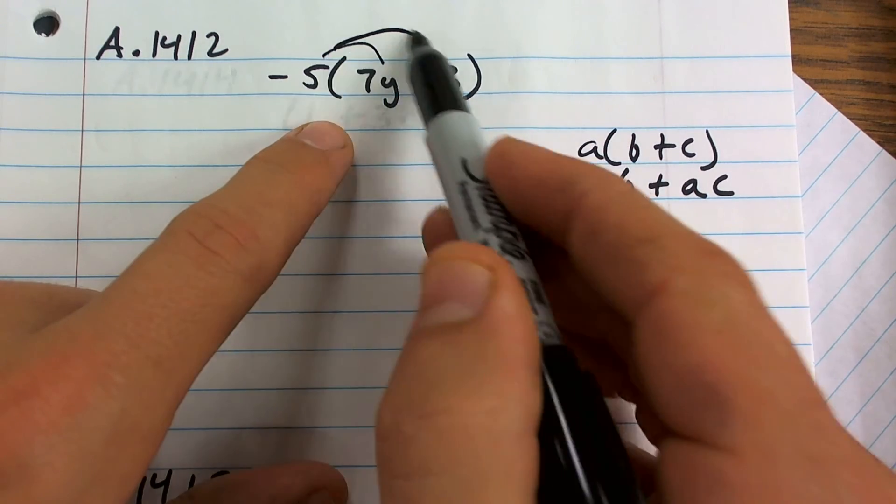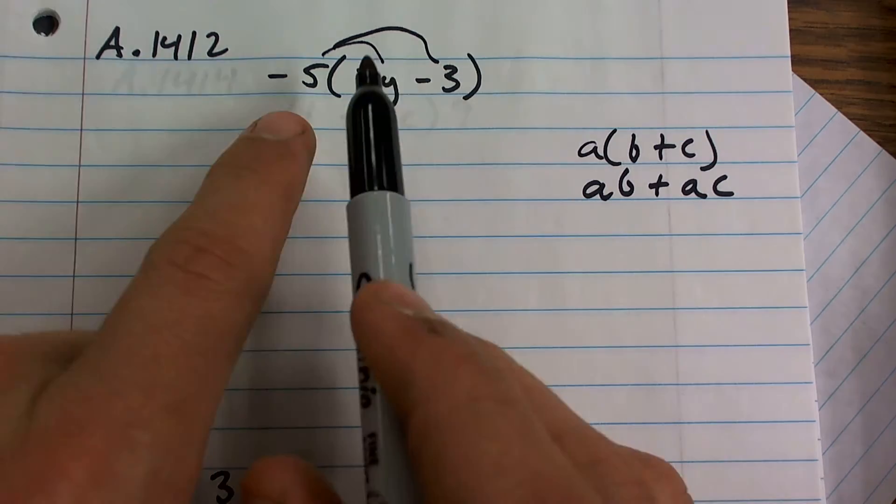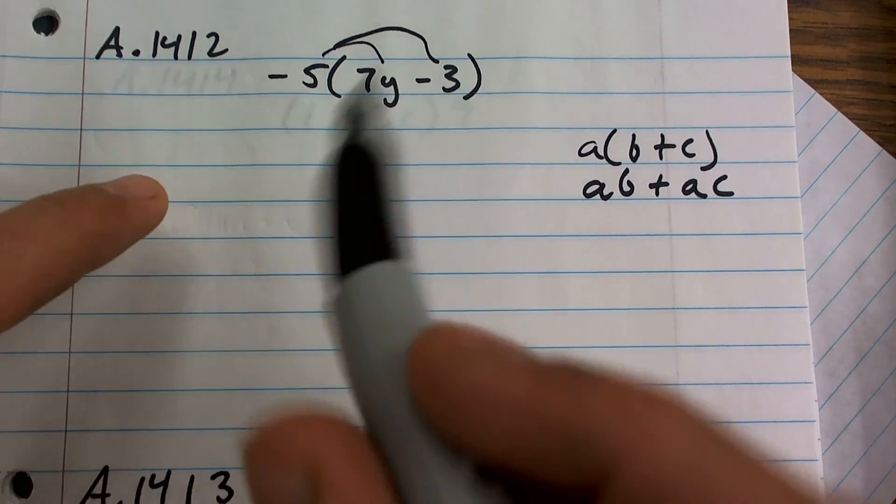So what I'm going to do is I'm going to have to distribute or multiply that negative 5 times both of the terms, not just by one, but you've got to make sure you multiply by both of them.